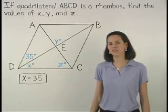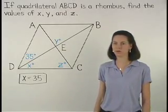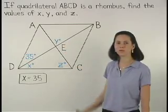Next, since the diagonals of a rhombus are perpendicular, Y must equal 90.